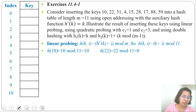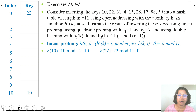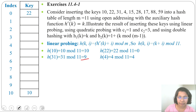First, 10 divide 11 remainder is 10, so we insert 10 at index 10. Next, 22 divide 11 remainder is 0, so we insert 22 at index 0. Next, 31 divide 11 remainder is 9, so we insert 31 at index 9. Next, 4 divide 11 remainder is 4.